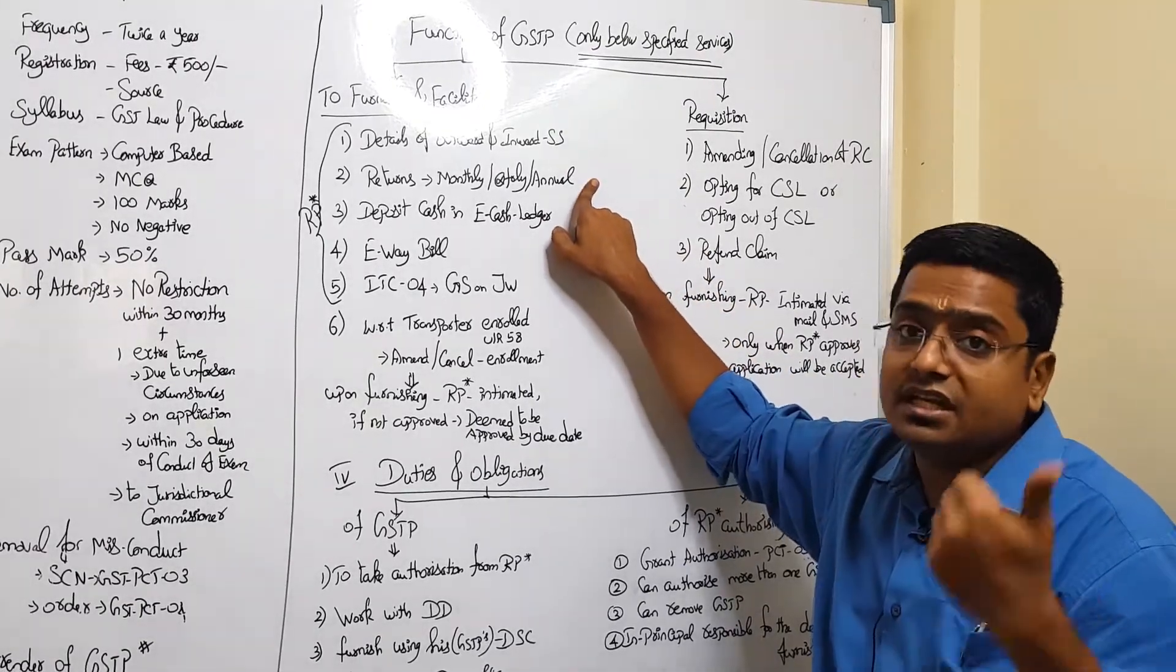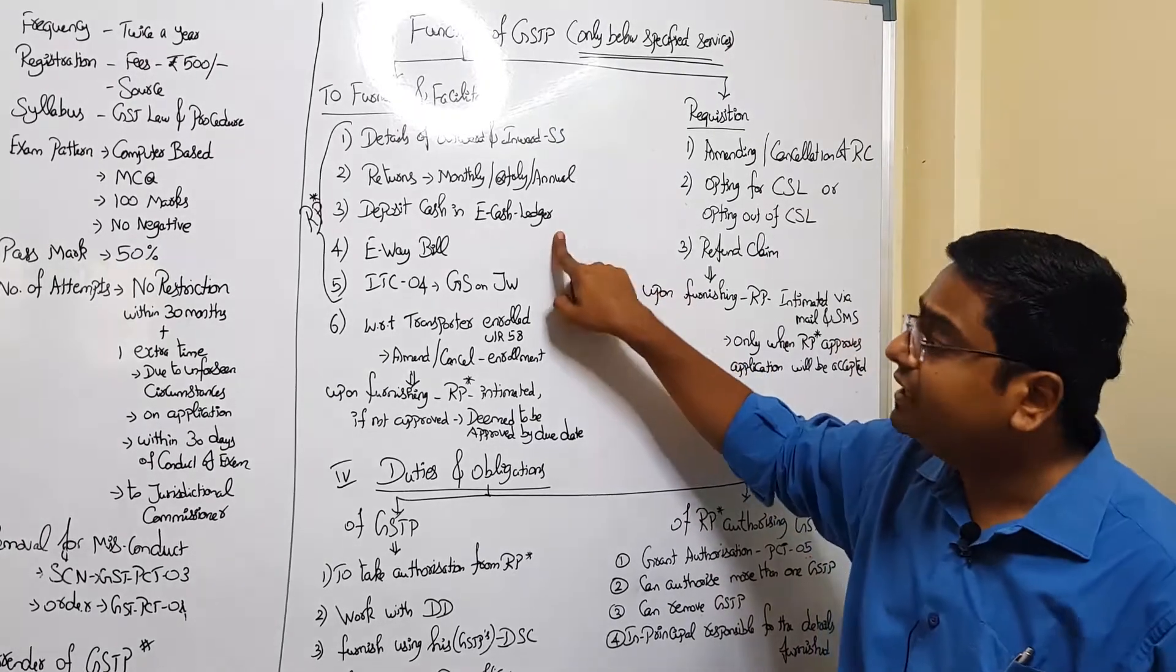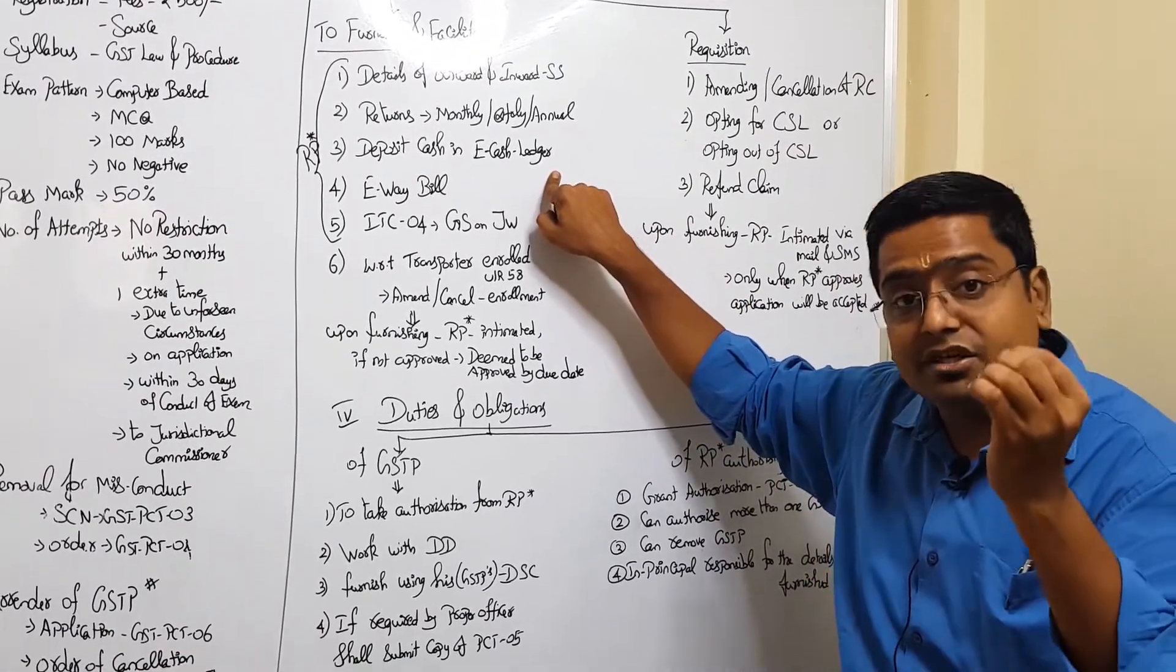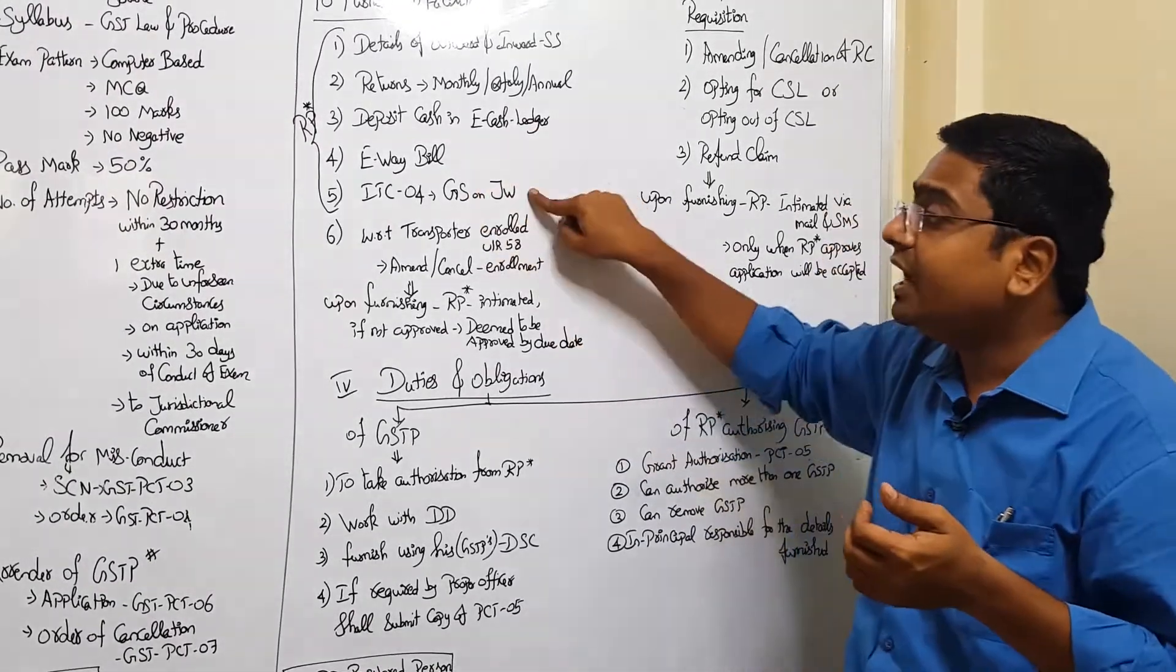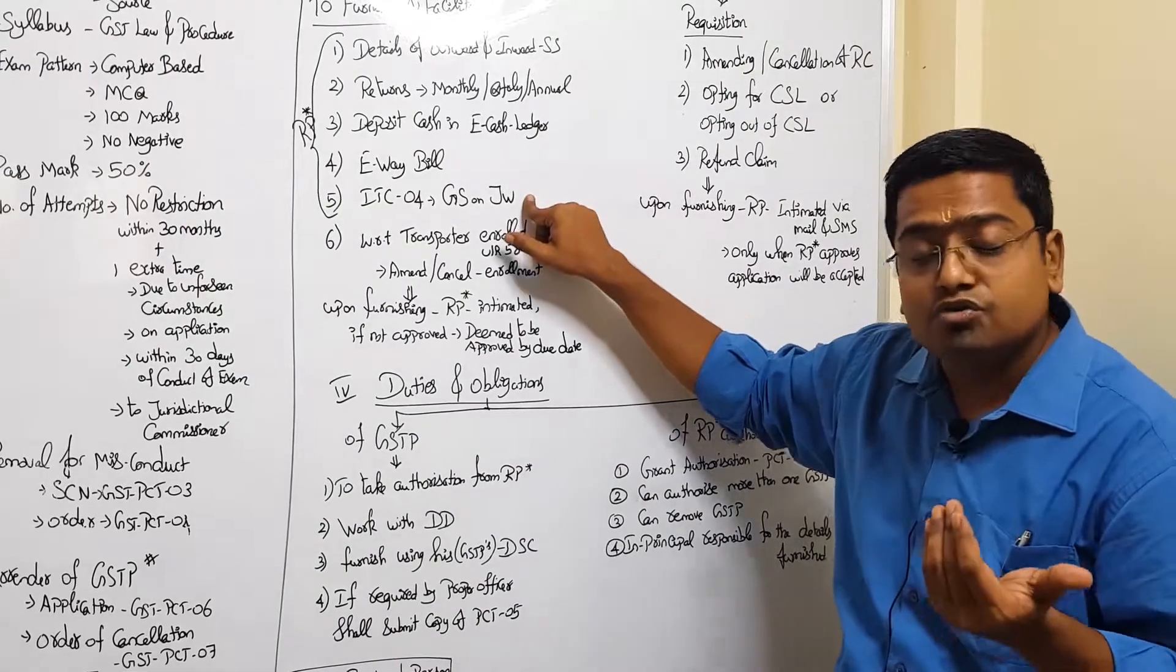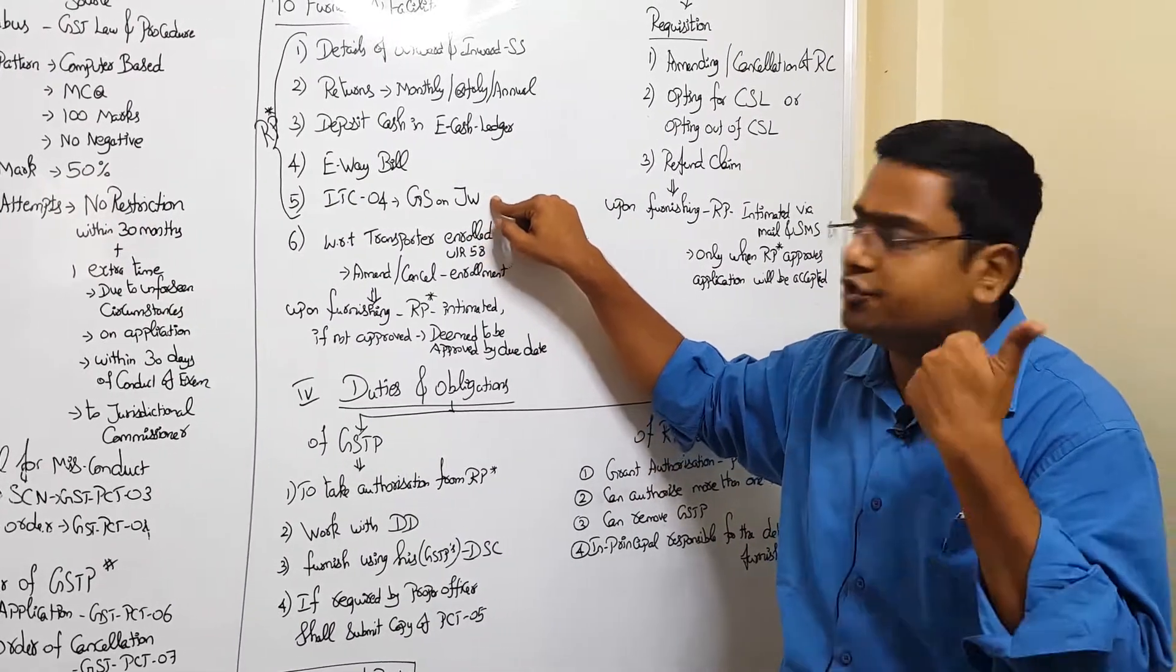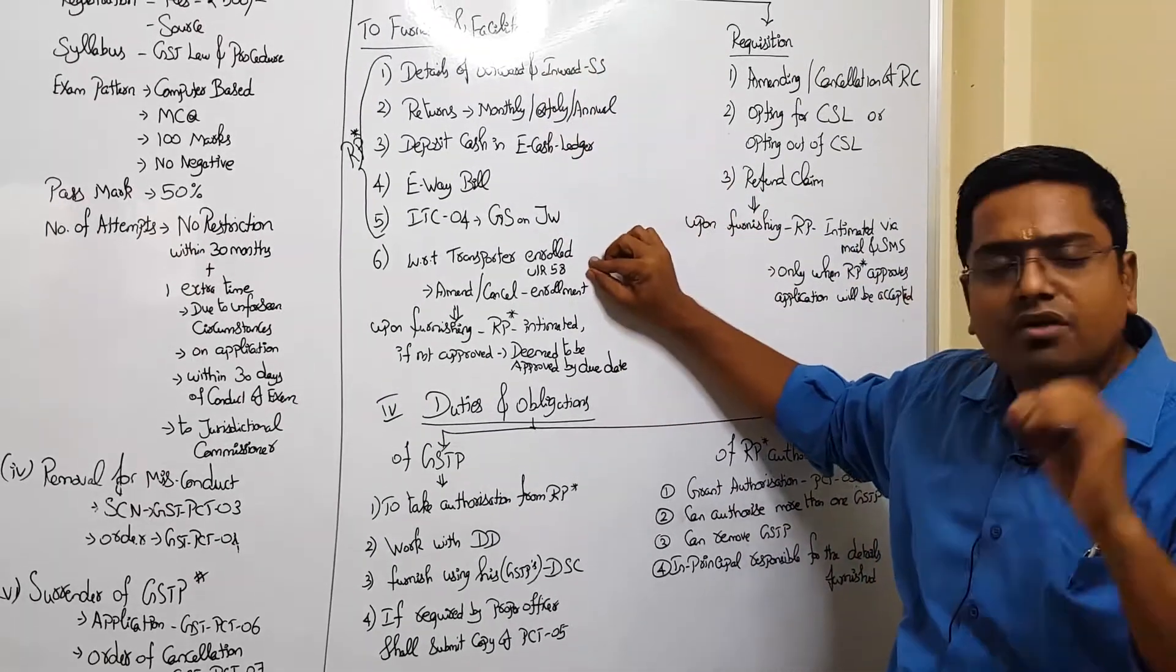Number two: furnishing the returns, which is basically monthly, quarterly - these are called periodical - and also annual return. And then he can facilitate the registered person in depositing cash in electronic cash ledger. And he can raise the e-waybill. And he can also submit the details of goods sent to the job worker, which is ITC-04.